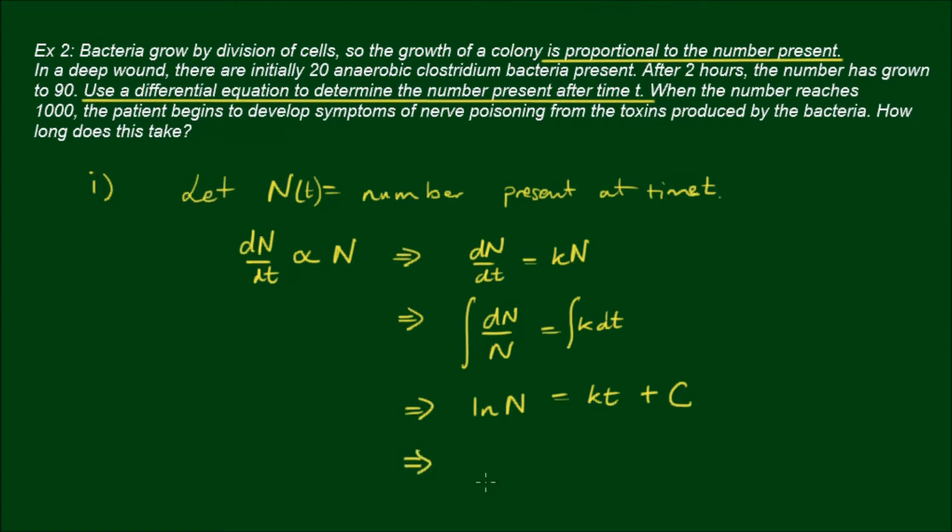We end up with the natural log of N equals kt plus an integration constant. As we worked out in the last video, once we go through all the rigmarole, we end up with N equals the coefficient A times e to the kt. So this is the general solution.